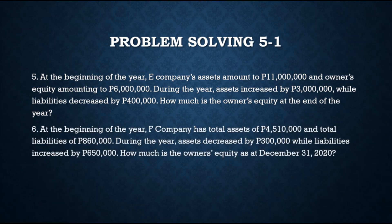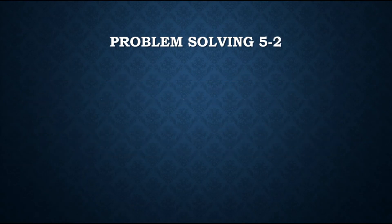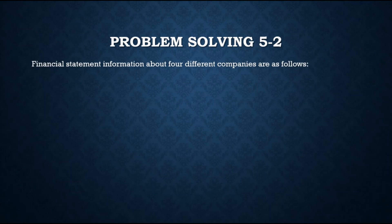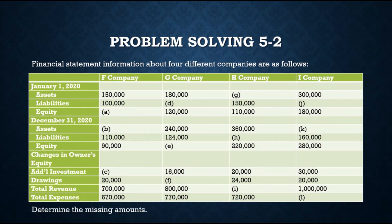Number 6 — at the beginning of the year, Company F has total assets of $4,510,000 and total liabilities of $860,000; during the year assets decreased by $300,000 while liabilities increased by $6,500,000; how much is owner's equity as at December 31, 2020? For Problem Solving 5-2, financial statement information about four different companies is given; determine the missing amounts.